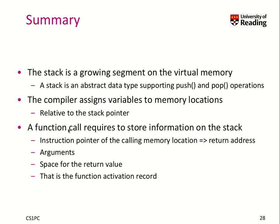Any time you do a function call, you store information on the stack. One item is the instruction pointer of the calling memory location, which is the return address — so once you complete the function call, you can continue seamlessly with the caller's code. You also pass the arguments, which are treated like local variables, and you need to store space for the return value. This is called a function activation record, or a stack frame.